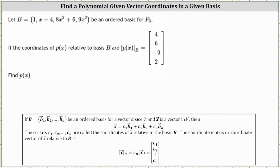Let the set B be an ordered basis for P3. If the coordinates of P(x) relative to basis B are 4, 6, negative 9, 2, what is P(x)? Meaning, what is P(x) relative to the standard basis for P3?